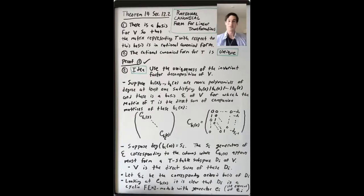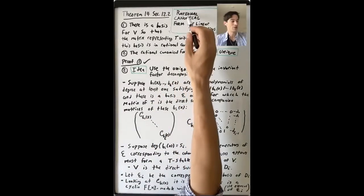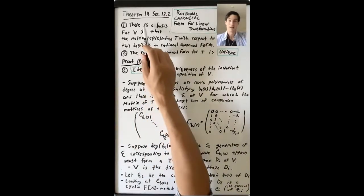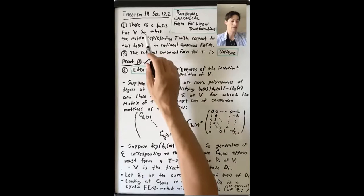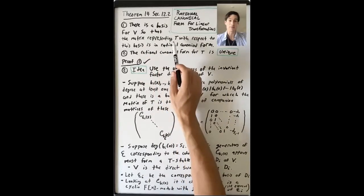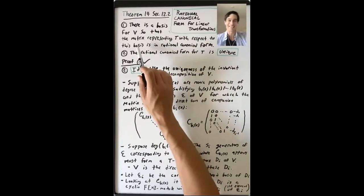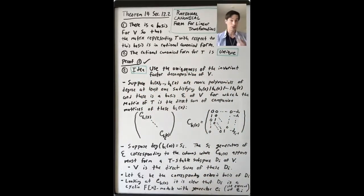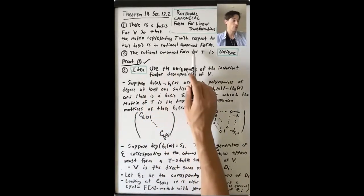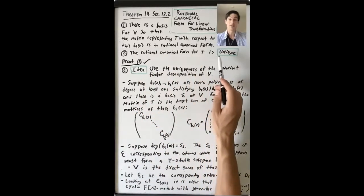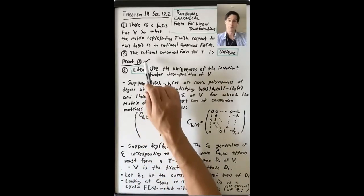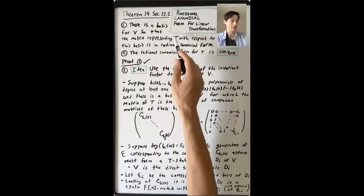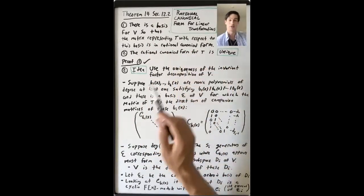We'll now prove Theorem 14 in Section 12.2: rational canonical form for linear transformations. This says two things. One, there is a basis for V so that the matrix representing T with respect to this basis is in rational canonical form. And two, the rational canonical form for T is unique.